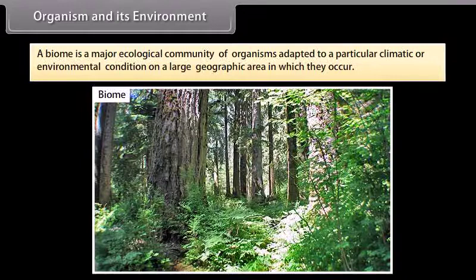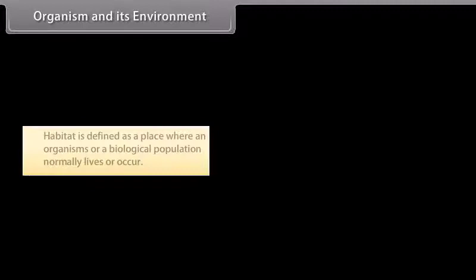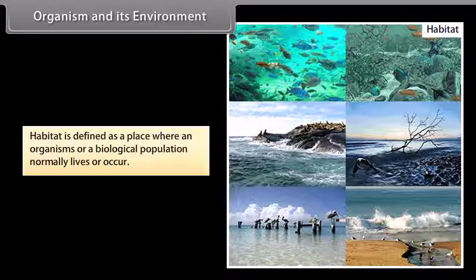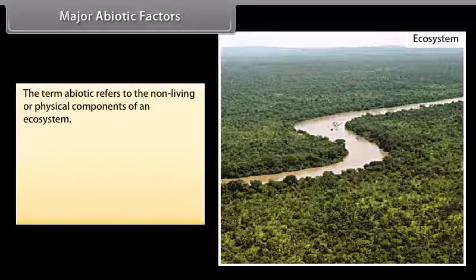A biome is a major ecological community of organisms adapted to a particular climatic and environmental condition on a large geographic area. Habitat is defined as a place where an organism or a biological population normally lives or occurs. Major abiotic factors: The term abiotic refers to the non-living or physical components of an ecosystem — these are temperature, water, light, and soil.